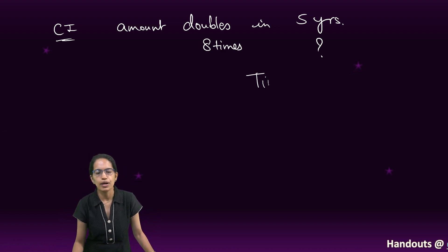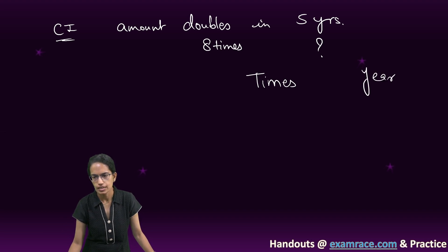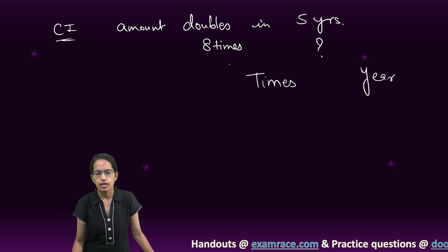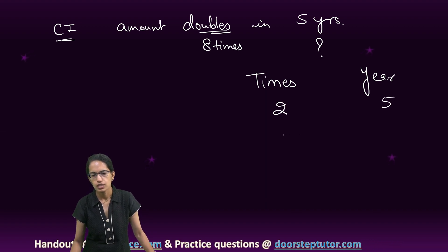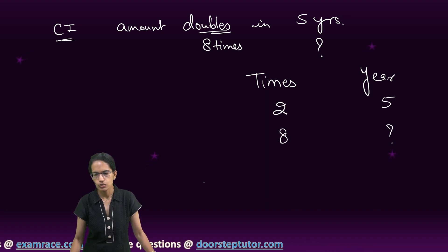A very simple way to solve it, I write at times and years, right? The amount becomes double. That means 2 times in 5 years and 8 times in unknown years.